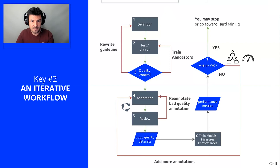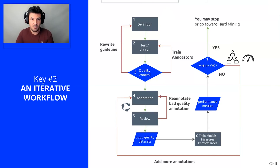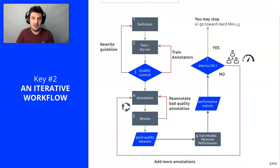The R&D team will be able to develop their models and compute performance metrics. As a last step, we can review the performance metrics and visualize the predictions of the models with the medical team. If it is not satisfactory, it is not a big deal — we will go back to annotation and re-annotate new batches of images. If the performance is satisfactory, we can move to other R&D projects and other models.